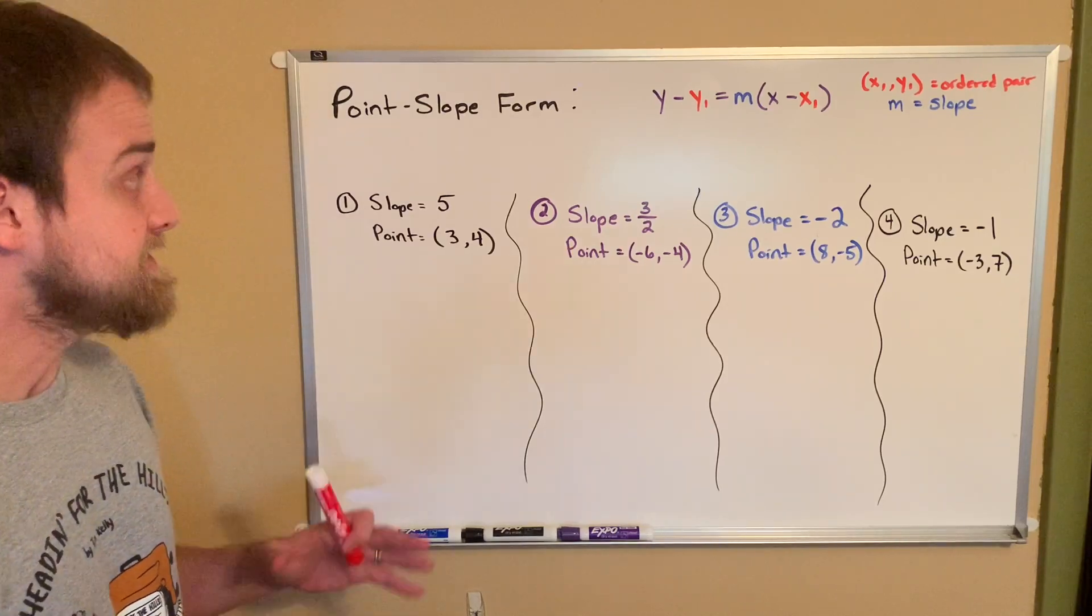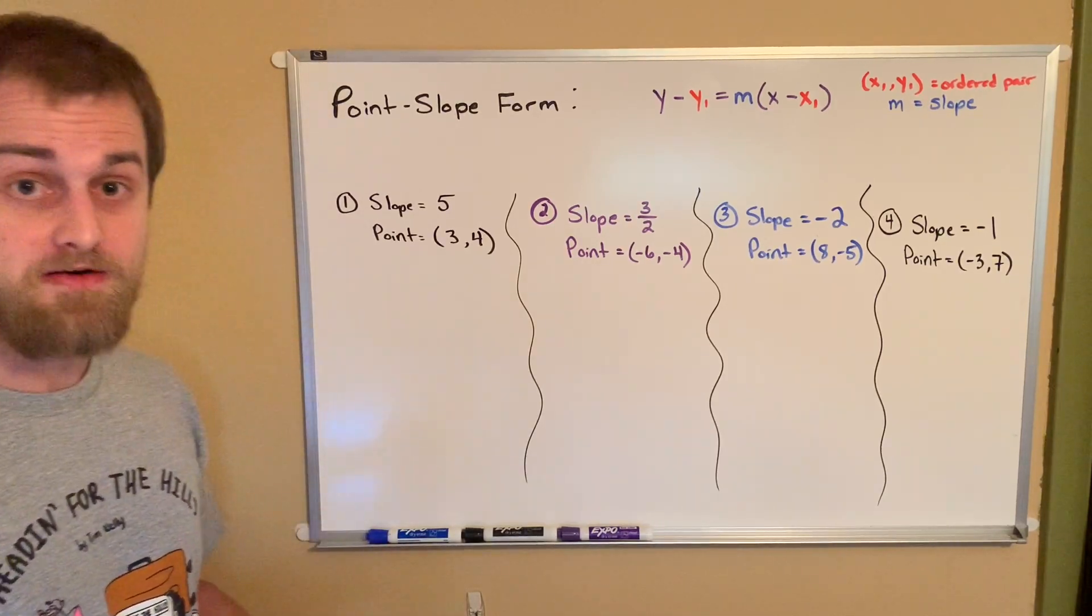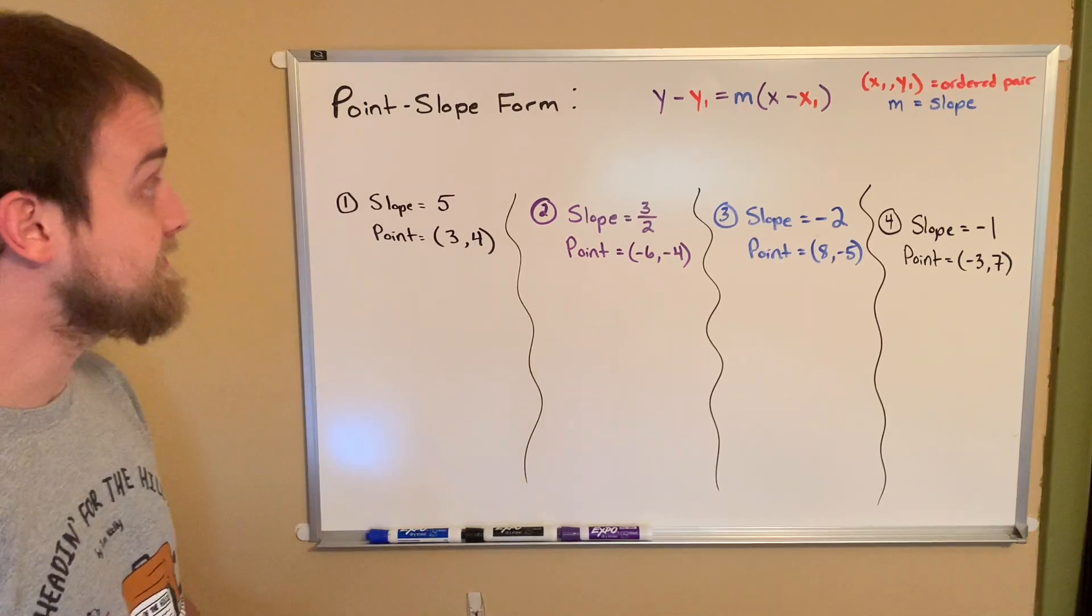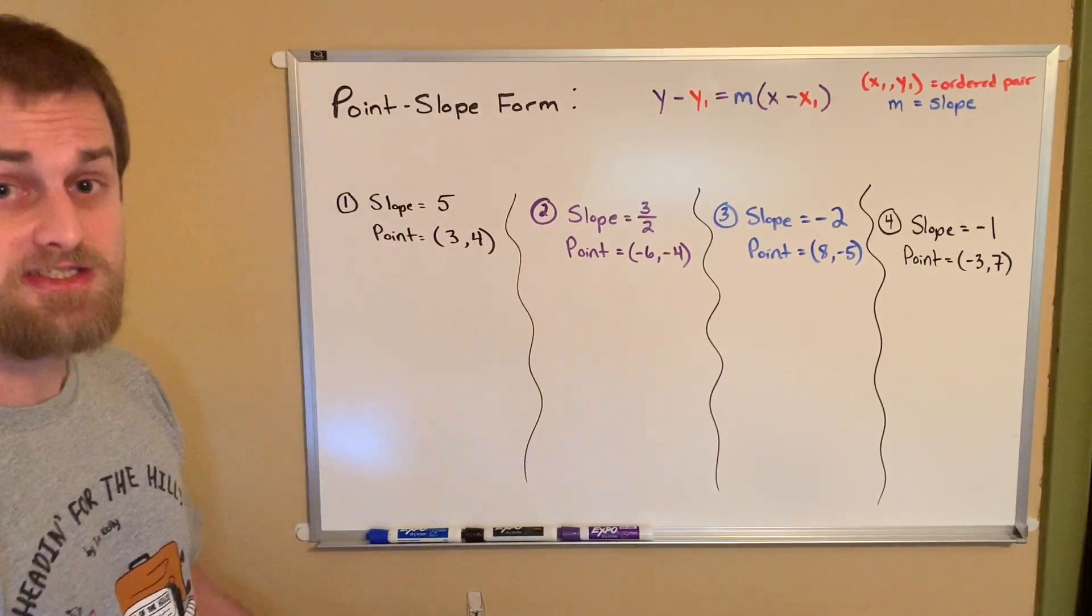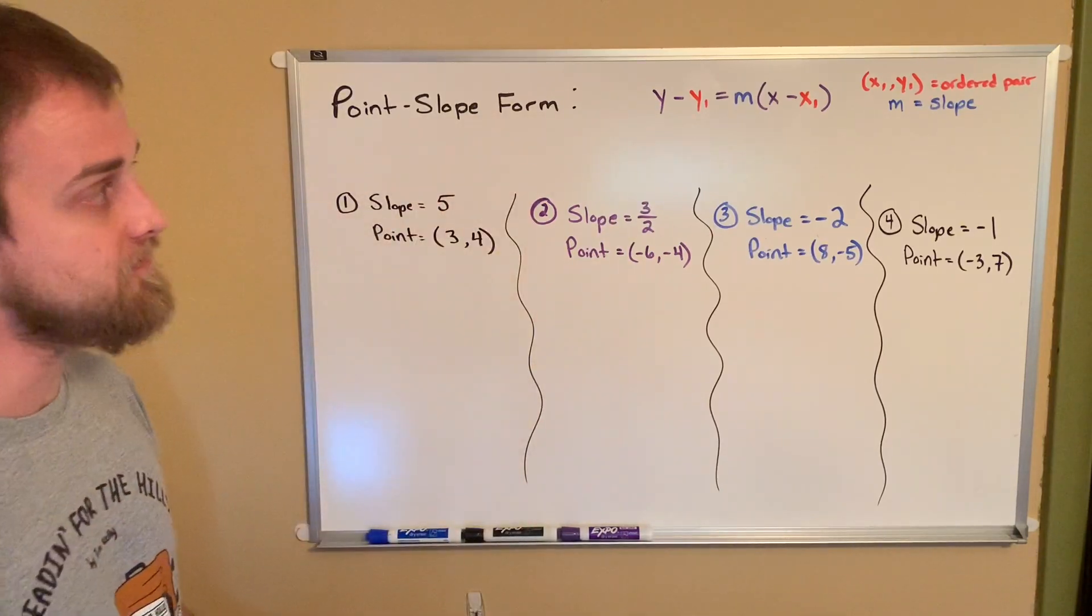Hey guys, Mr. Story. Today I want to talk about another type of equation that we can use to graph lines. It's a form just like slope-intercept form, just like standard form. This is called point-slope form.